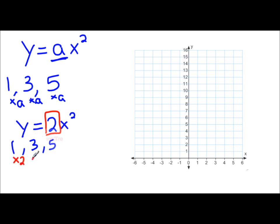So we're going to multiply each one of those by 2 to find our new step pattern of 1 times 2 is 2, 3 times 2 is 6, 5 times 2 is 10. This is our new step pattern: 2, 6, 10.